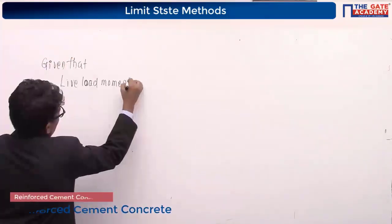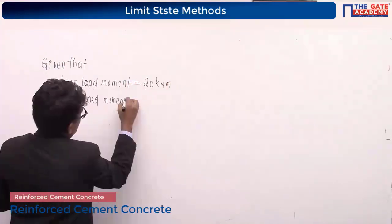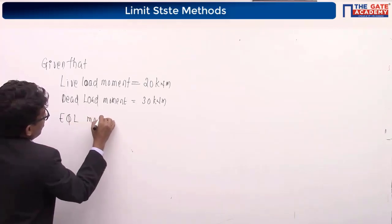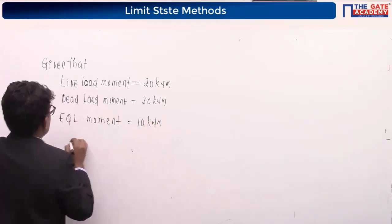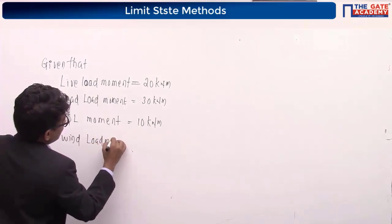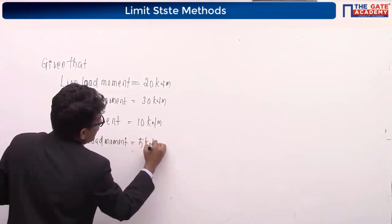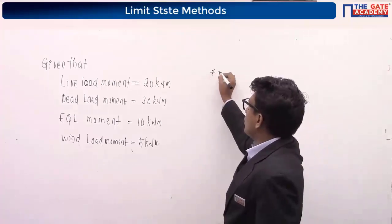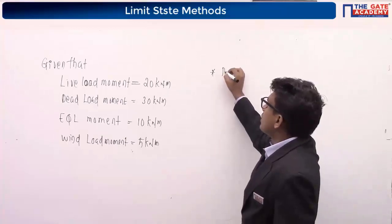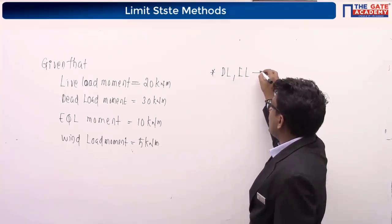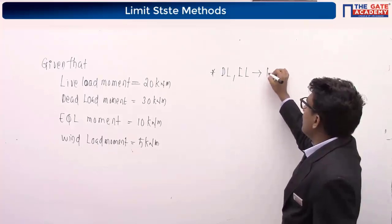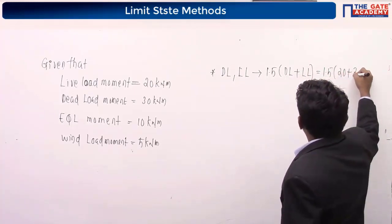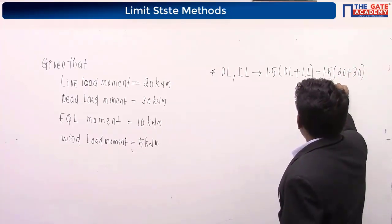Given: dead load moment = 20 kN·m, live load moment = 30 kN·m, earthquake load moment = 10 kN·m, wind load moment = 5 kN·m. For load combination 1 — dead load plus live load — the design moment = 1.5 × (20 + 30) = 75 kN·m.